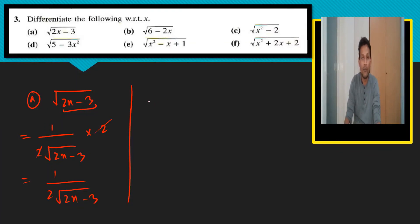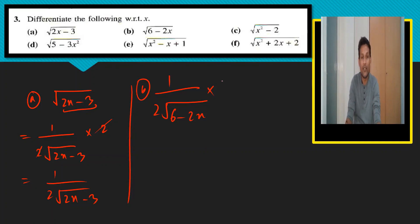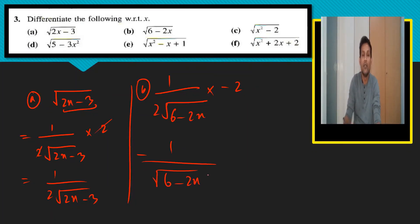For part d: one upon two under-root, copy the bracket, the inner differentiation of (6 minus 2x) is just minus 2. The 2 and minus 2 cancel to give minus 1 over under-root of (6 minus 2x). The minus sign remains in the final answer.